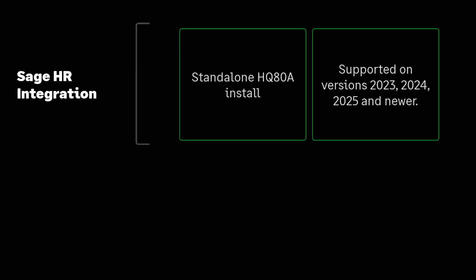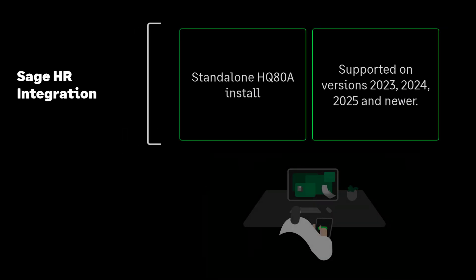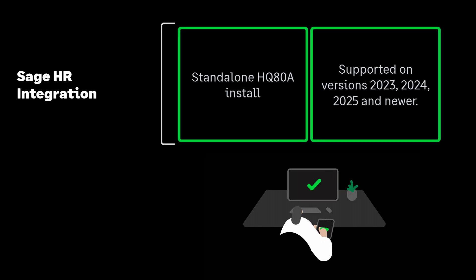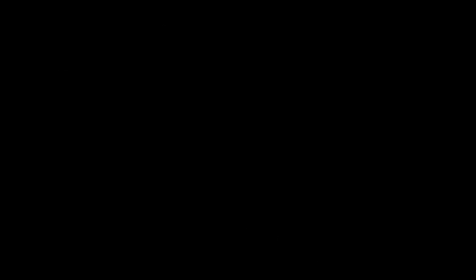In addition to installing 2025.0, you will need to install and activate the standalone Sage HR Integration version 8.0. For more information about this release, including technical information, program fixes, requirements, and more, please refer to the Sage 300 2025.0 release notes.